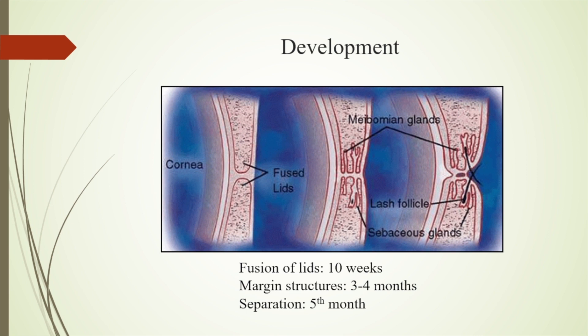Eyelids are facial adaptations that protect and moisten the ocular surfaces. They are basically developed from the optic cup. The upper lid develops from the frontonasal folds, and the lower lid develops from the maxillary folds.